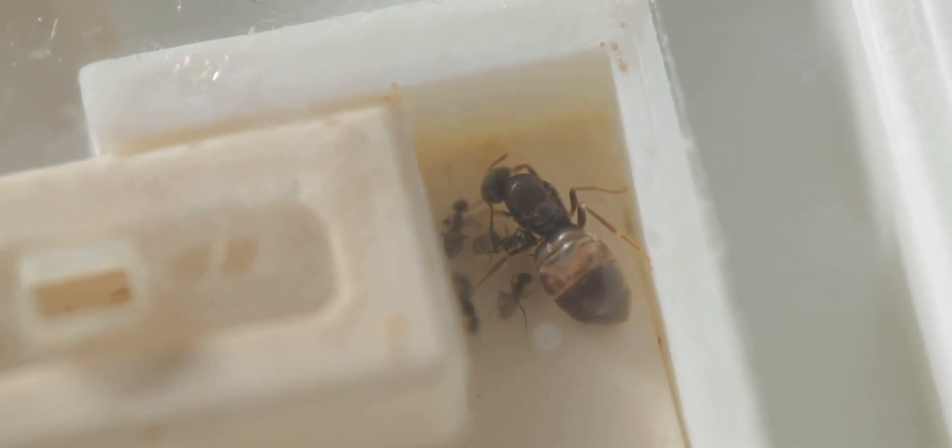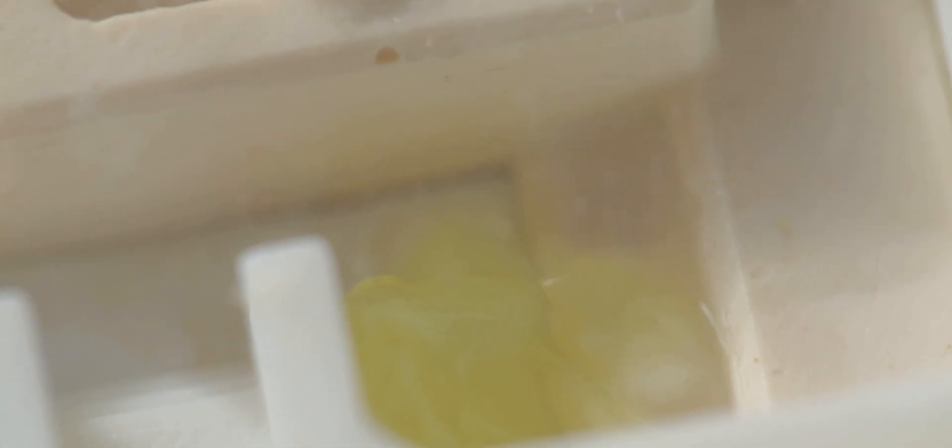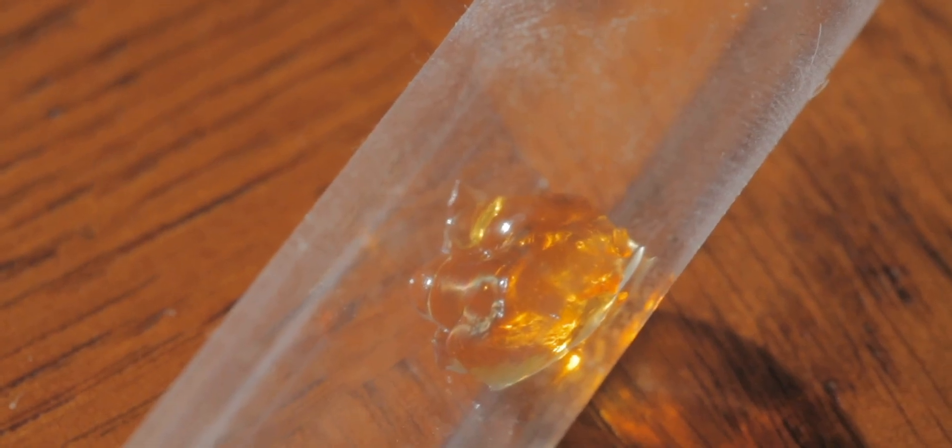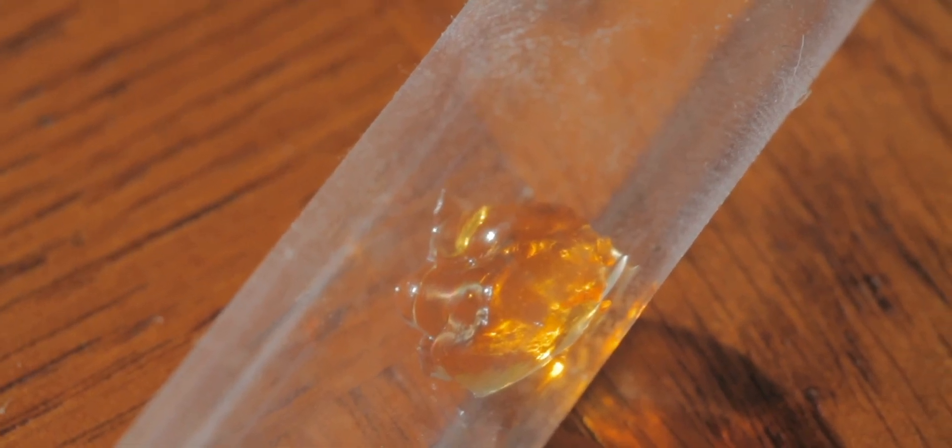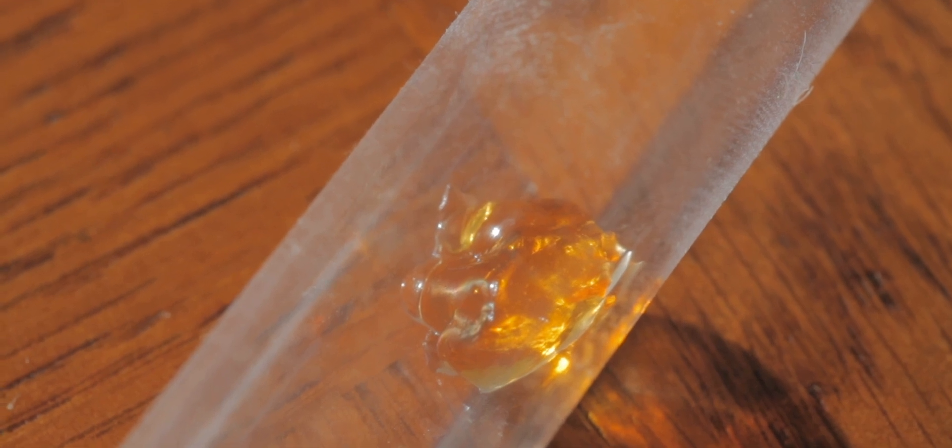If you've got advice on whether I should leave the red cover off or if there's anything I should do now to encourage the queen, or just literally leave them alone and just put some water in there occasionally, then all that advice is very helpful. As you can see on screen, there's a little bit of the jelly that I've put elsewhere and they simply don't go for it.